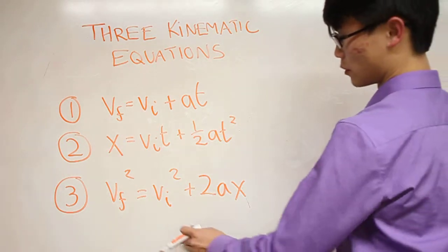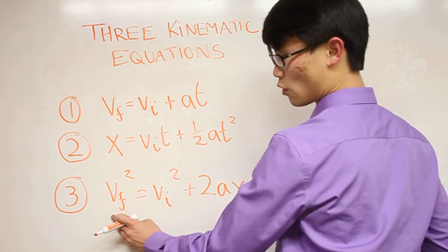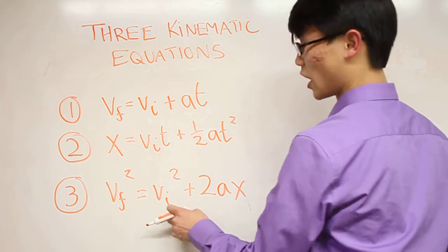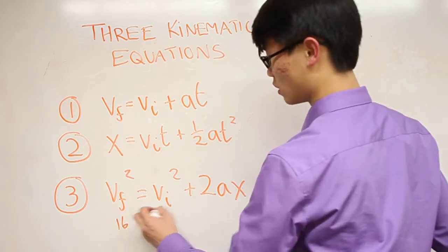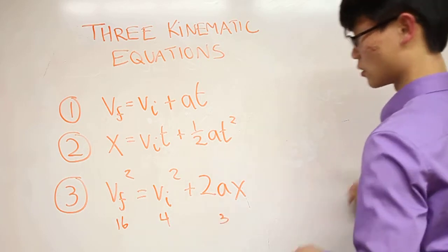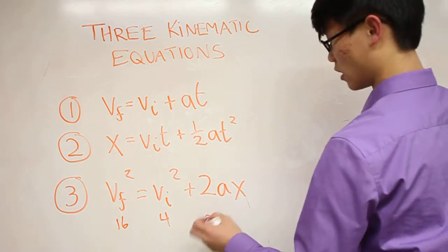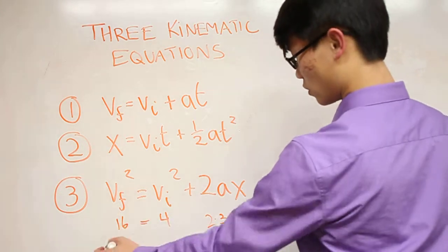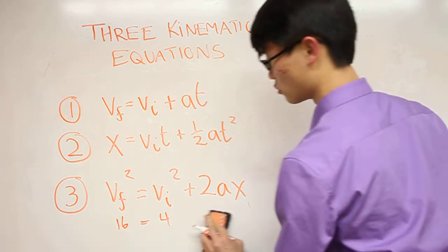Let's say your final velocity is 4 meters per second. You started at 2 meters per second, so it's 16 and 4. And you accelerated at 3 meters per second squared. Then how much distance did you travel? 12 divided by 6 is 2. So you traveled 2 meters.